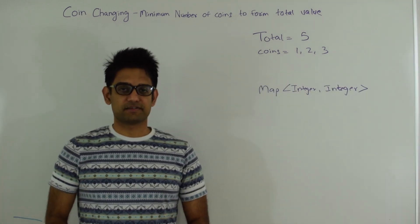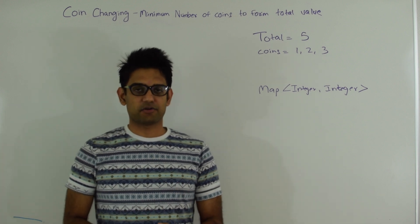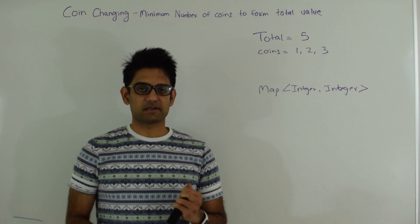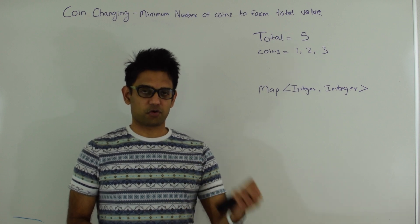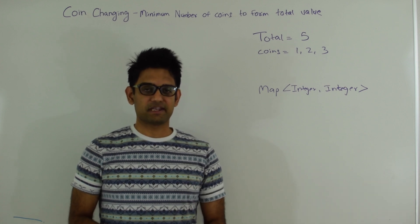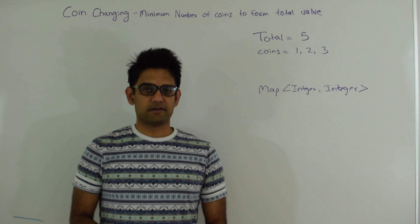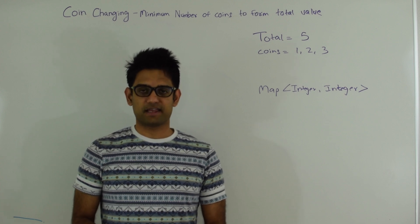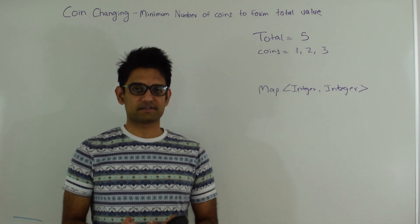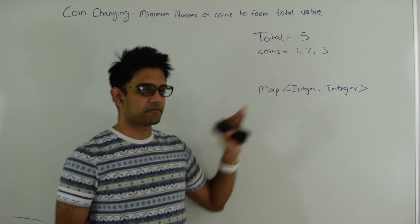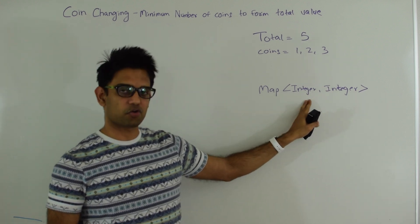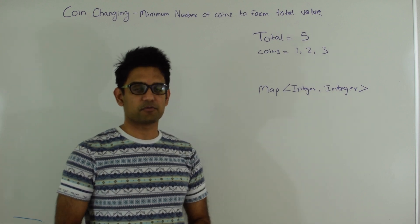The idea of this algorithm is very simple. We have a recursion with a for loop inside it. This for loop iterates through every coin, subtracts the coin's value from the total, and then goes into recursion again with that reduced total, repeating until we reach a value of 0. Every time we calculate the minimum number of coins to form a certain total, we store that information in a map from integer to integer — the total maps to the minimum number of coins needed.